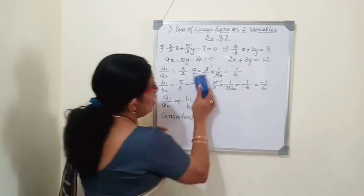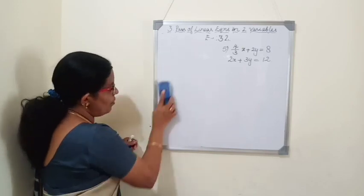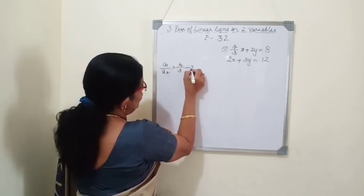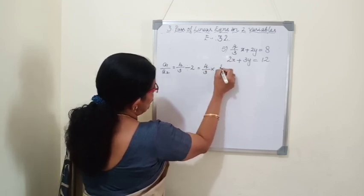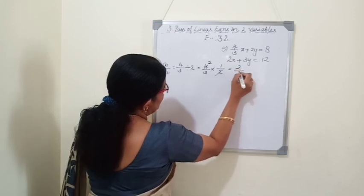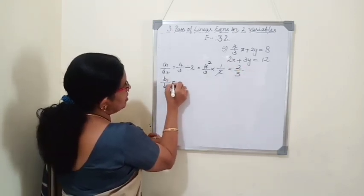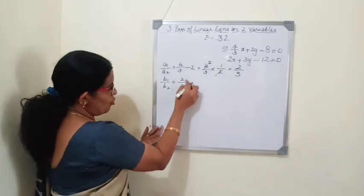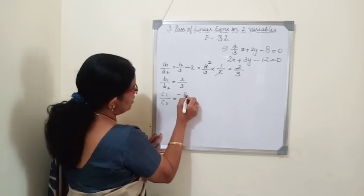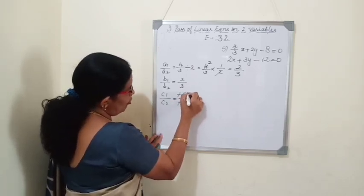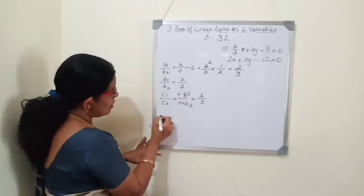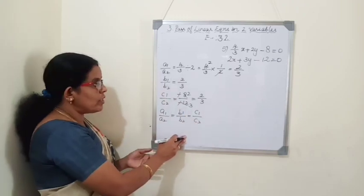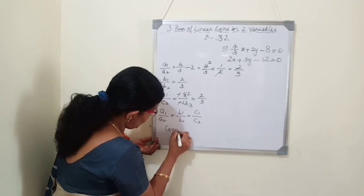Fifth question: a1 by a2 equals (4/3) divided by 2 equals 4/3 times 1/2 equals 2 by 3. b1 by b2 equals 2 by 3. c1 by c2 equals minus 8 by minus 12 equals 2 by 3. All three ratios are equal, so a1 by a2 equals b1 by b2 equals c1 by c2 — the lines will be coincident, infinite number of solutions, and it is consistent.